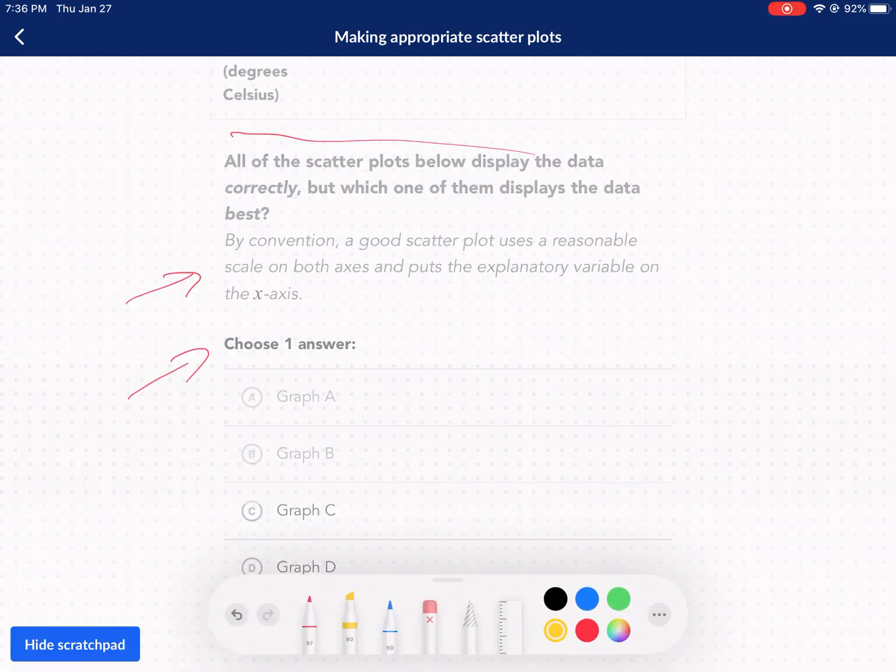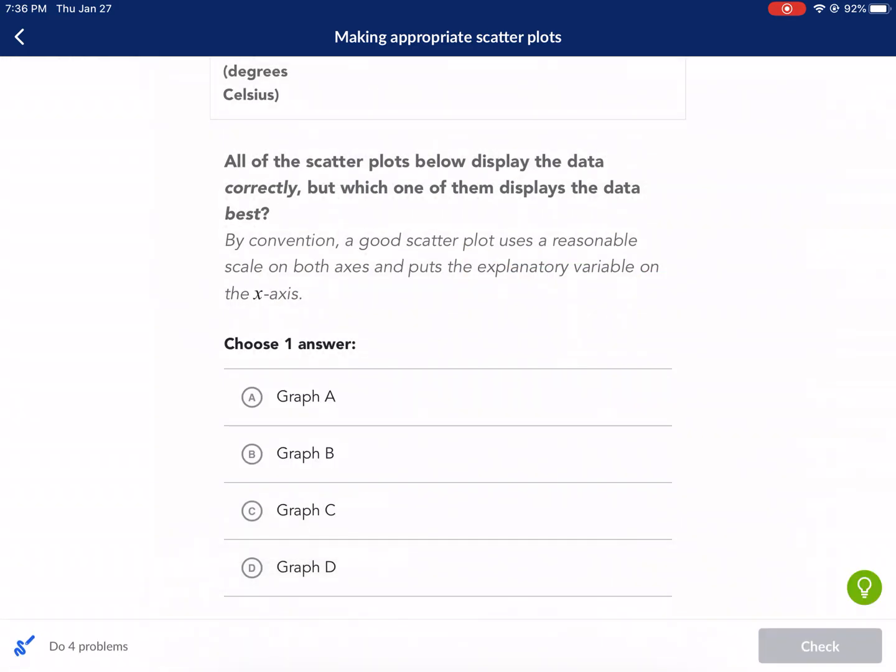It says that the x-axis is for the explanatory variable. I'm not a big fan of calling it the explanatory. I like better the independent variable for the x-axis, and basically what that means is the variable that no matter what it's going to go.